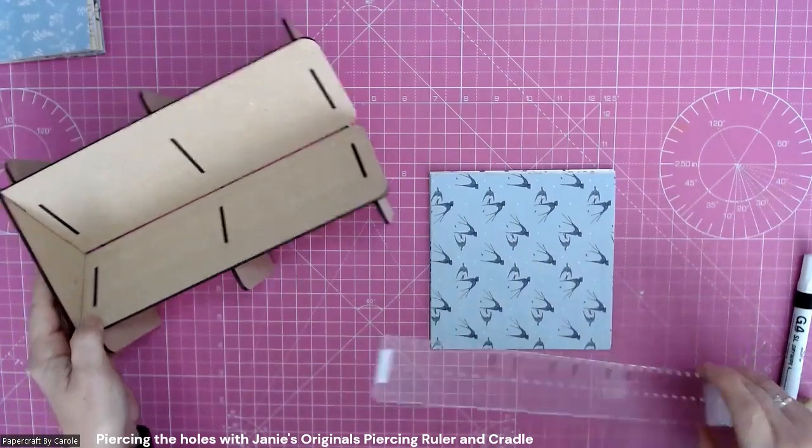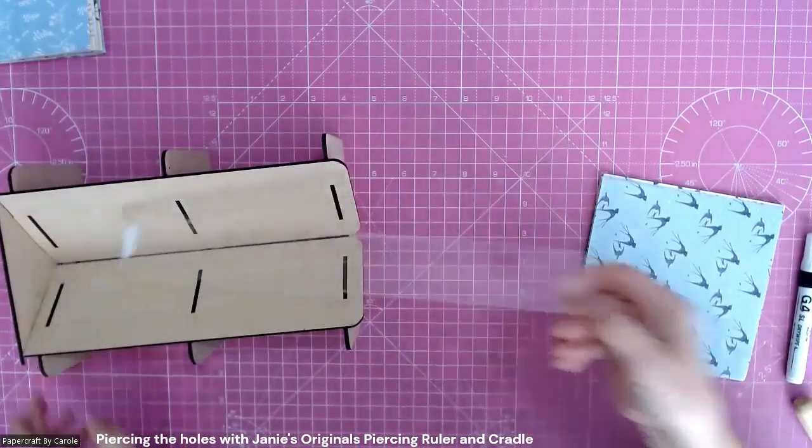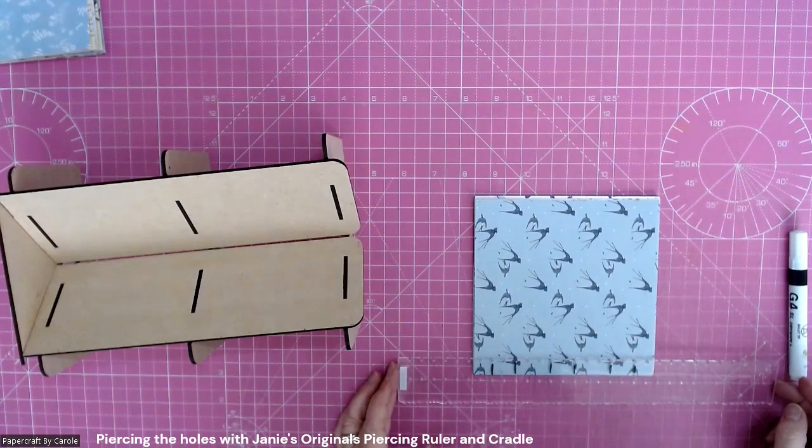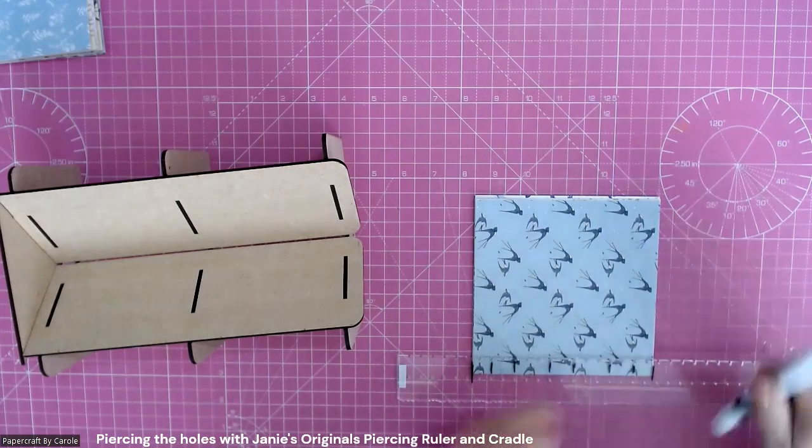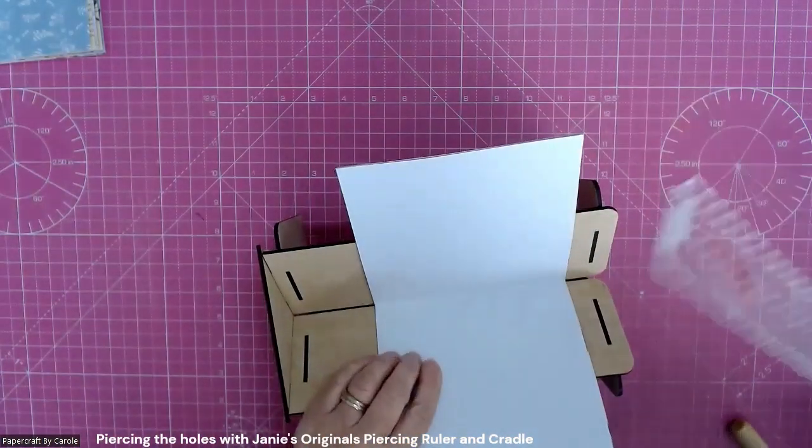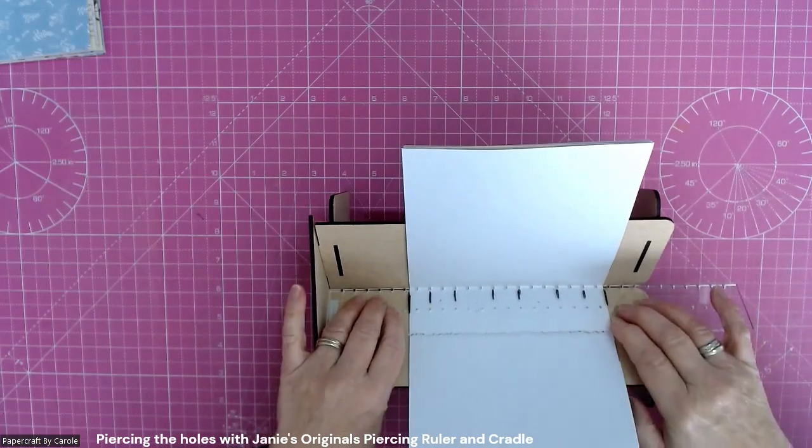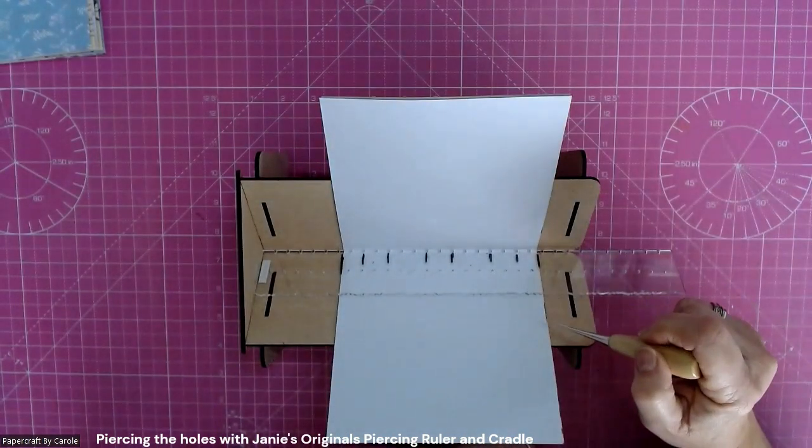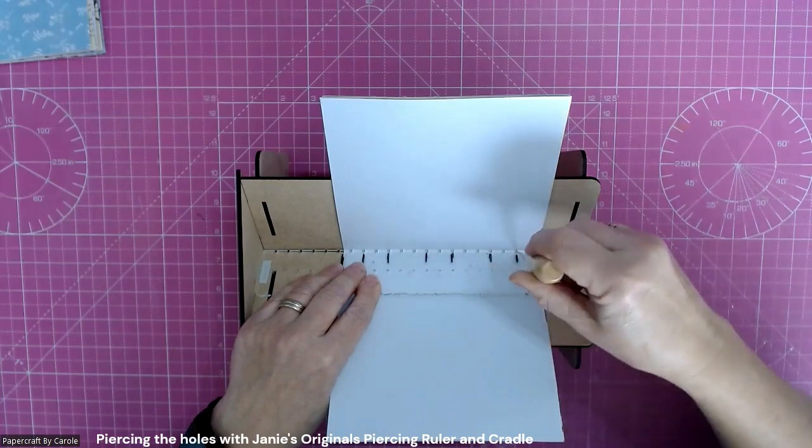This is then going to sit in my punching cradle. Now the one thing I've just realized I didn't do which is really important, I needed to mark on here the ends of the signature. This is so that I can make sure when I put this in the cradle that I get my signatures lined up. You can see here that I can now, I've pushed the ruler up against this end, I've lined the ends of my signature with the lines I made.